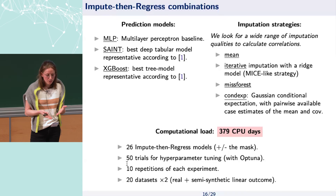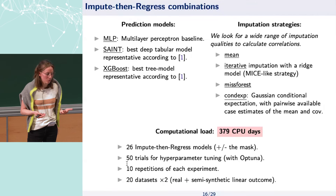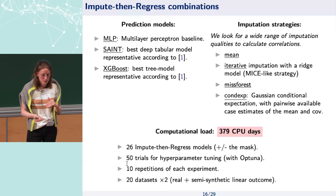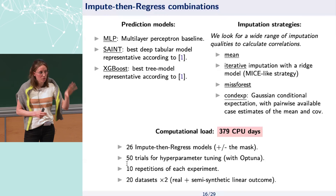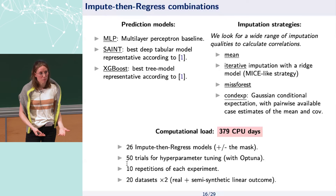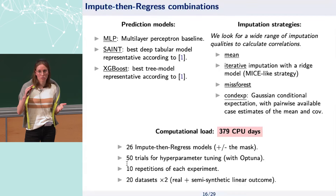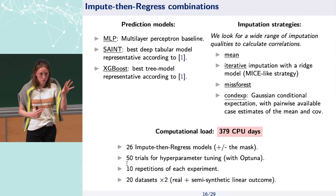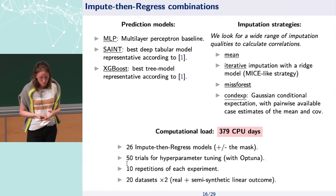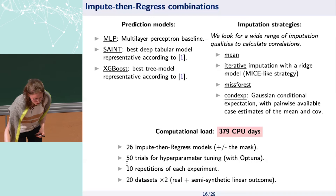These experiments cost the equivalent of one year on one CPU. The reason is we have 26 impute-then-regress models to test (counting with and without the mask), 50 trials of hyperparameter tuning per model using Optuna, 10 repetitions per experiment with different train/val/test splits and newly generated missing values, and 20 datasets each duplicated with a linear outcome version.